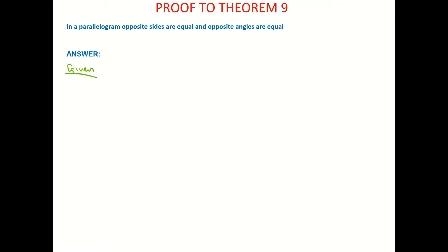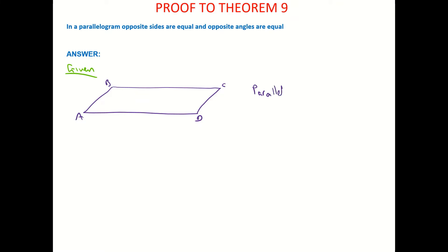So what we are given is a parallelogram. We call it A, B, C, D — parallelogram ABCD. So that's what we're given.